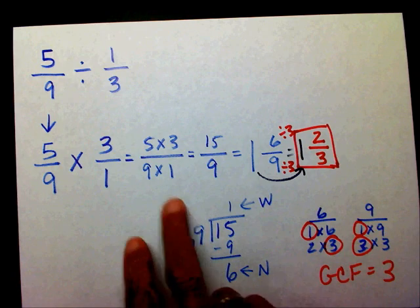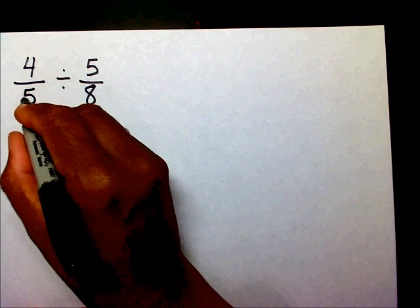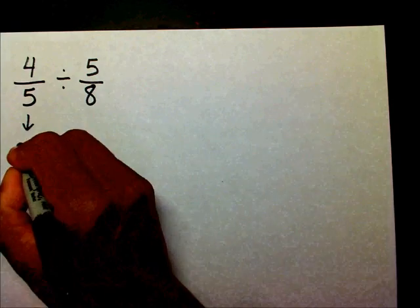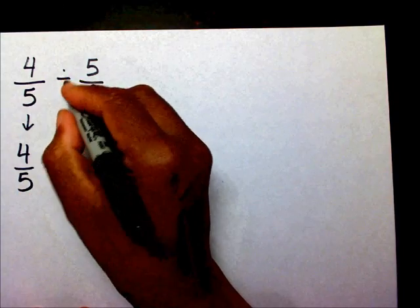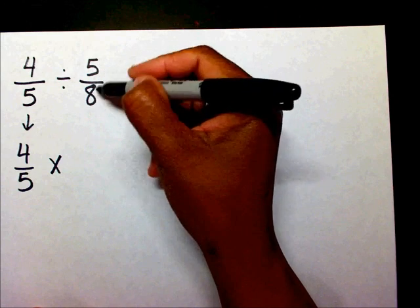Let's work one more — let's let you work one. Alright, let's go with four-fifths divided by five-eighths. Please divide those two fractions and pause the video. Alright, so I'm going to write the first fraction down: four-fifths. I'm going to change my division sign to multiplication, and I'm going to take the reciprocal of five-eighths, which is eight over five.